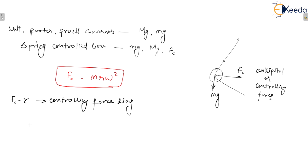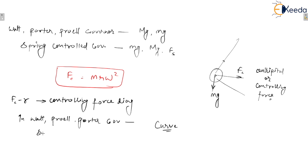In the Watt, Proell, and Porter governors — since these are gravity-controlled governors — the controlling force diagram will be a curve. But in the spring-controlled governor, or Hartnell governor, the graph will be a straight line, not a curve.